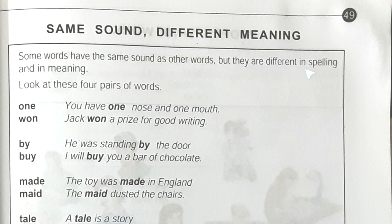Look at these four pairs of words. Here it's written: 'one' — you have one nose and one mouth. The spelling is different but pronunciation and sound are the same. This is also 'one,' and the example is: Jack won a prize for good writing.